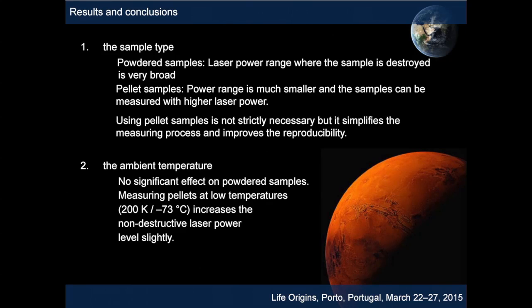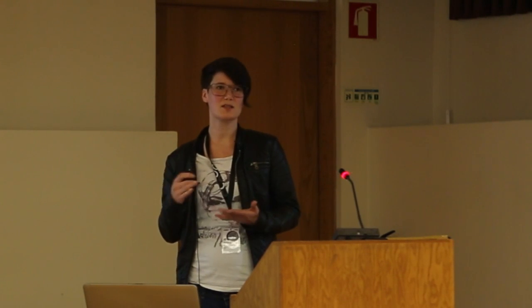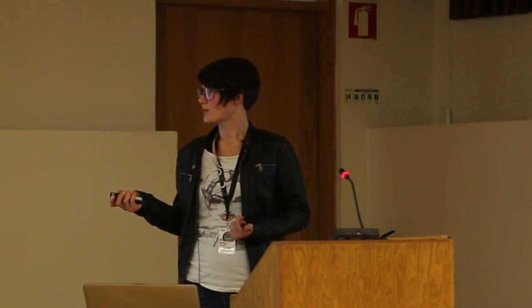When measuring powdered samples, the laser power range at which the sample is destroyed is very broad and unpredictable. When using a pellet, this range is smaller and the sample can also be measured at higher laser intensity, which may be better for Mars measurements. Using pellets improves reproducibility and simplifies the measurement process. Regarding ambient temperature, there is no significant effect for powder samples and only a small, hardly significant effect for pellets — more measurements are needed in this direction.